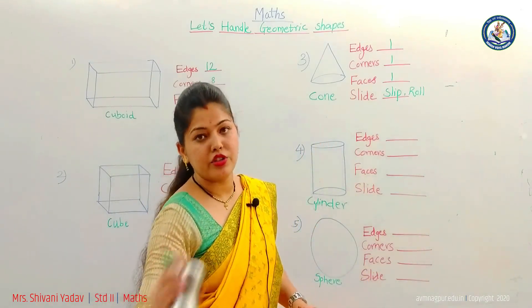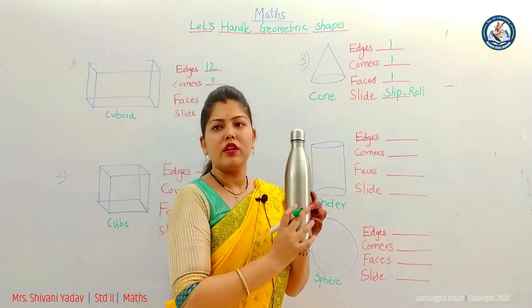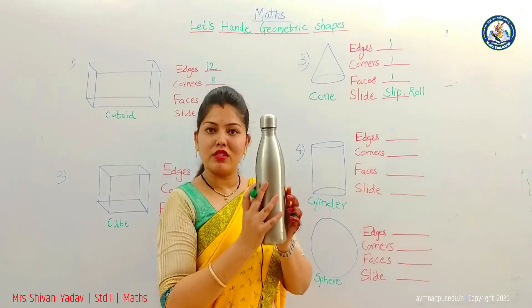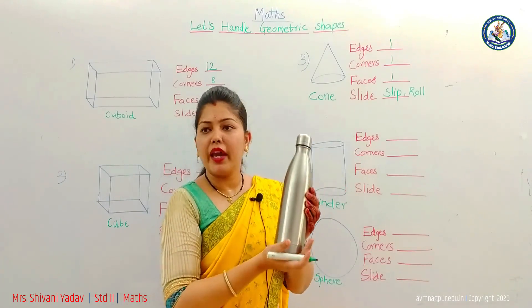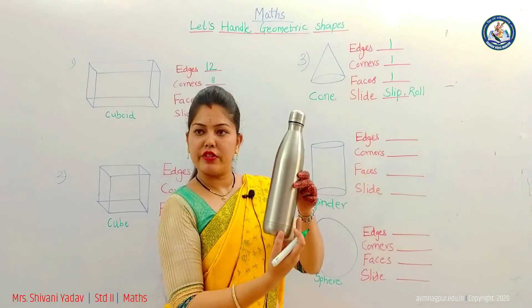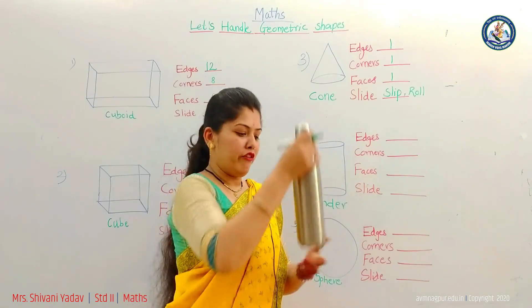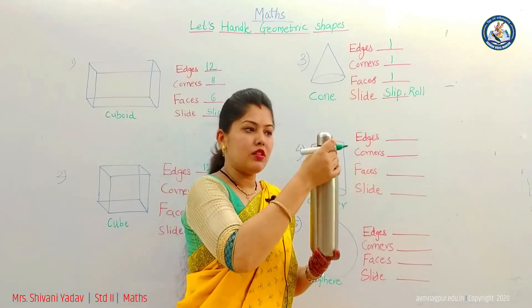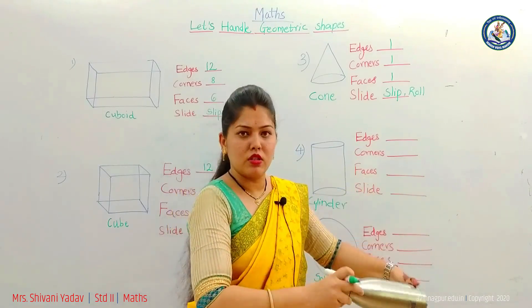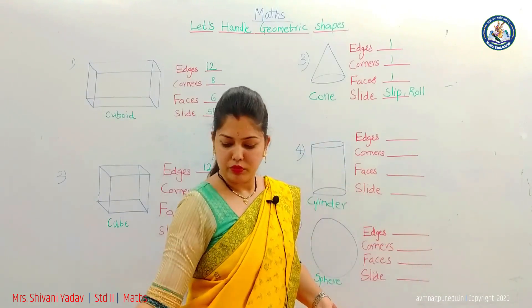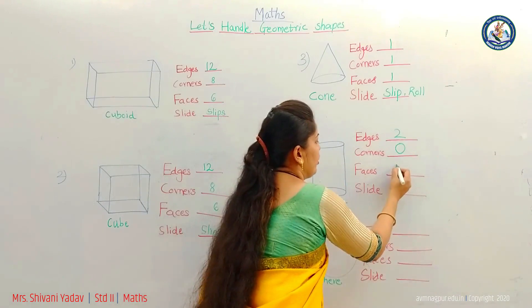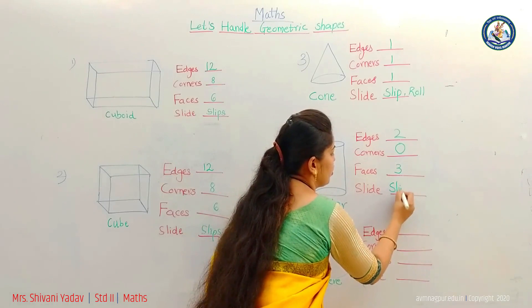Now the fourth shape — cylindrical shape. A water bottle is the best example of a cylindrical shape. How many edges does a cylinder have? Cylinder has two edges, one from each side. It does not have any corner. It has three faces: top face, bottom face, and a curved circular face. When we put this cylindrical shape on a slide from its base or top, it just slips. But if we put it from its curved circular face, it rolls. So it also slips as well as rolls. Edges: two. Corners: zero. Faces: three.